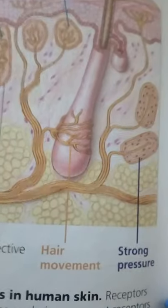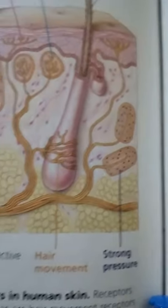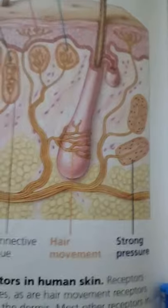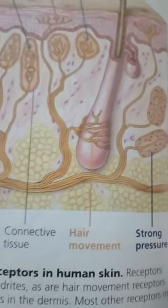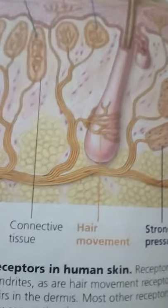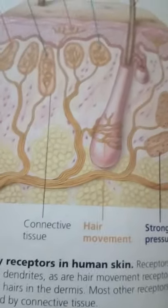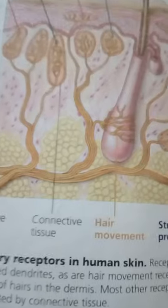Chemoreceptors include both general receptors that transmit information about the total solute concentration of a solution, and specific receptors that respond to individual kinds of molecules. Osmoreceptors in the mammalian brain, for example, are general receptors that detect changes in the total solute concentration of the blood and stimulate thirst when osmolarity increases. Water receptors in the feet of house flies respond to pure water or a dilute solution of virtually any substance.